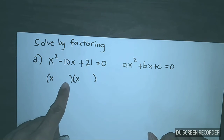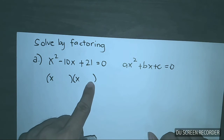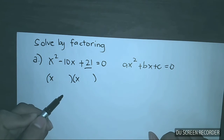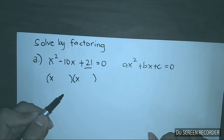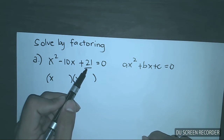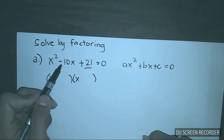Now, to figure out the next terms, we need to consider positive 21. We need to think of two numbers — when we multiply them the answer is positive 21, but when we add them the answer is negative 10.